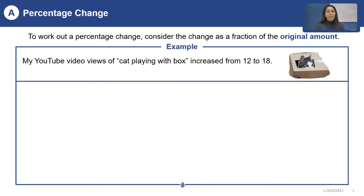For example, my YouTube video views of cat playing with box increased from 12 to 18. First, let us find the actual change. 18 minus 12 is equal to 6.